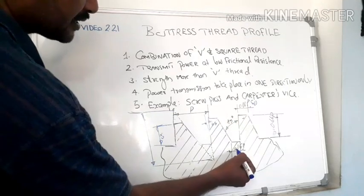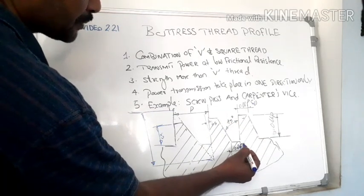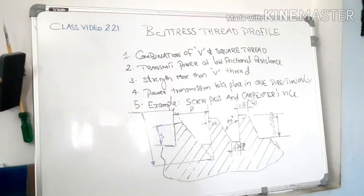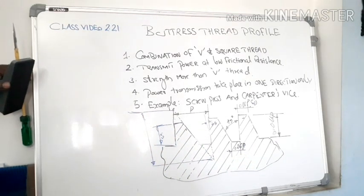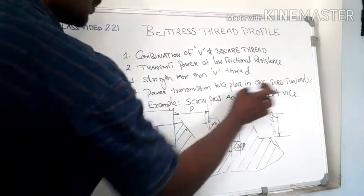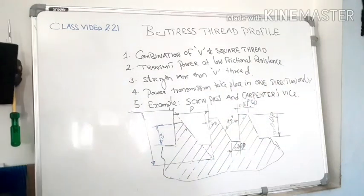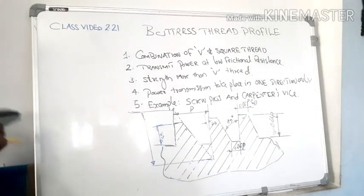The root width is marked here, same as that of crest width - that's also 0.16 pitch. This is the shape of buttress thread mainly used in carpenter's vice. It is having motion in one direction.